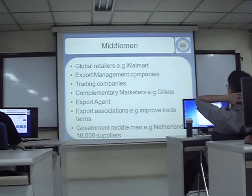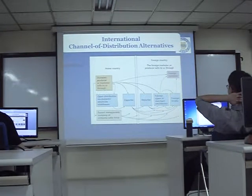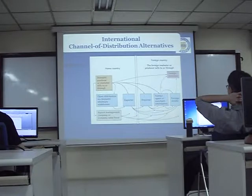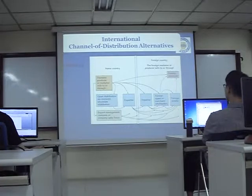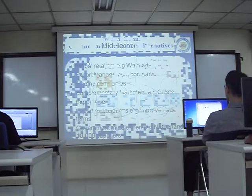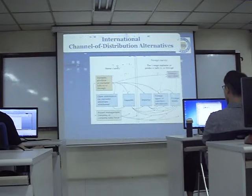Looking at different types of middlemen — we have global retailers. As the producer, we can sell directly to the foreign retailer. For example, we sell to Walmart and then Walmart sells to everybody. That's pretty simple and easy for our company.